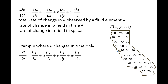Let's examine one more situation where the temperature varies in time but is uniform across California. The fluid element experiences a change in temperature due to the temperature field changing in time. However, the temperature field does not vary in space, so the three spatial derivatives are zero.